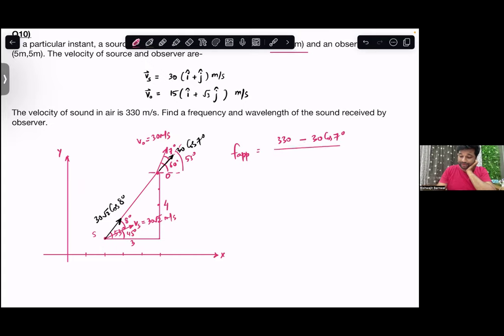Divided by 330 minus 30 cos 7 degrees. Cos 60 minus 53 degrees - cos a minus b formula is cos a cos b plus sin a sin b. So this will be 1 by 2 into 3 by 5, plus root 3 by 2 into 4 by 5.